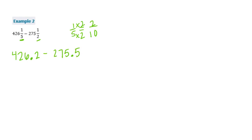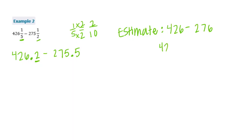Now I'm going to make an estimate, and this time I will round. So 426 and 2 tenths — this is a 2, so that makes the 6 stay the same — so 426 minus 275 and 5 tenths. The 5 tells me to round up, so I'll do 276. We would get 12 minus 7 is 5, 3 minus 2 is 1, so my estimate is 150.